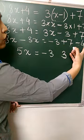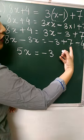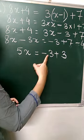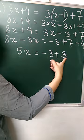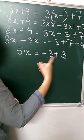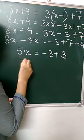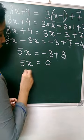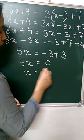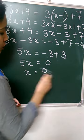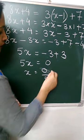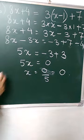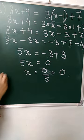The sign will be of the bigger number. Who is bigger? 7 and 4 — 7 is bigger, so plus. Now you can see plus 3 and minus 3, that is plus minus, so 3 minus 3 gives you 0. So 5x is equal to 0. Then x is equal to 0 upon 5, which is equal to 0. So the value of x is 0.